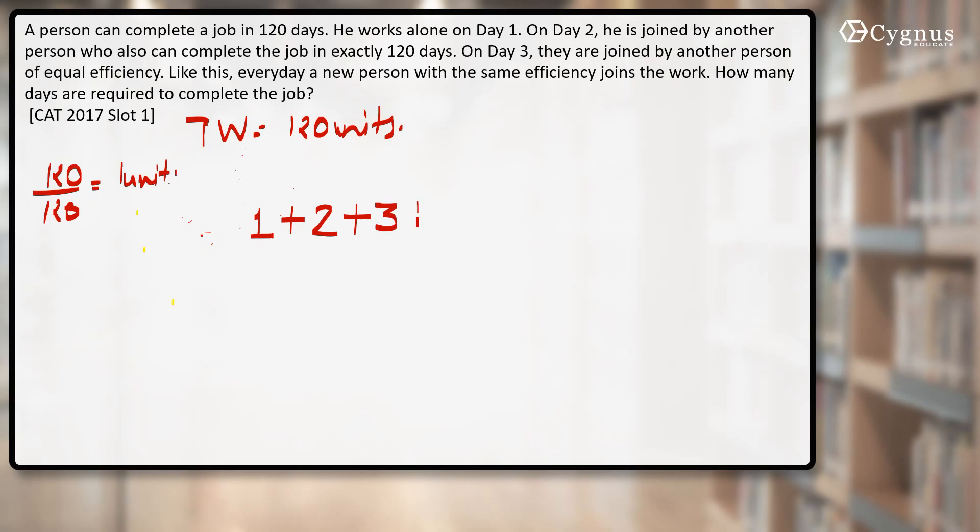You can see the pattern here. That means the fourth day work should be four, fifth day work should be five. So let's say the whole work was finished in n days. So according to that, what I can say is the nth day work will be n. This is the total work done by them in n days.